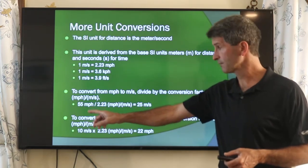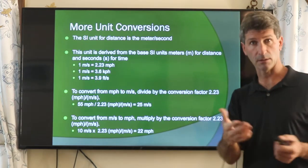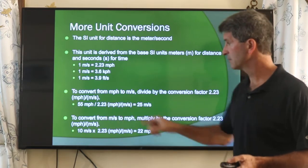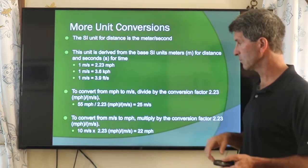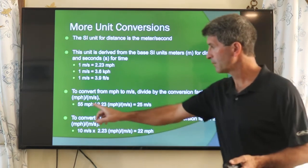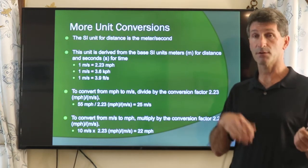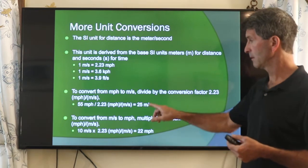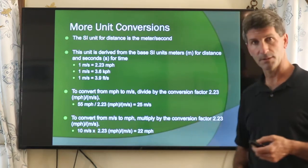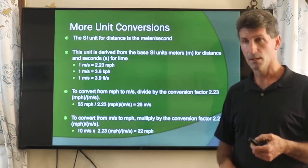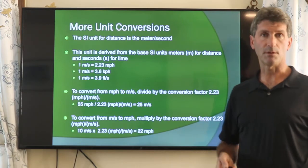Going the other direction: 55 miles per hour — I can convert that to meters per second because I know there's 1 meter per second for every 2.23 miles per hour. I look that up and turn it into a fraction. Miles per hour divided by miles per hour cancels out, and the inverse gives me back meters per second — 25 meters per second. Or convert the other way: 10 meters per second, multiply by that conversion factor, and you get 22 miles per hour. You're dividing or multiplying by a conversion factor to go from one system of units to another.